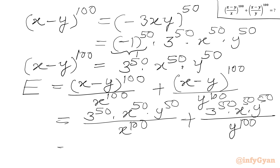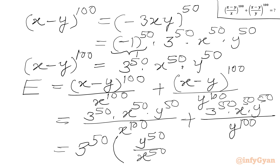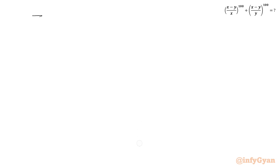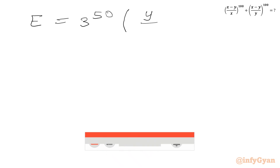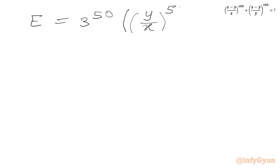We can take 3 to the power 50 as a common factor. In the first fraction, x to the power 50 in the numerator cancels with x to the power 100 in the denominator, leaving y to the power 50 over x to the power 50. In the second fraction we get x to the power 50 over y to the power 50. Using exponent law we write expression E equal to 3 to the power 50 times, in bracket, y over x whole power 50 plus x over y whole power 50.